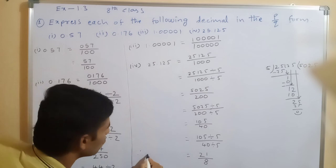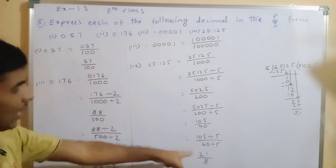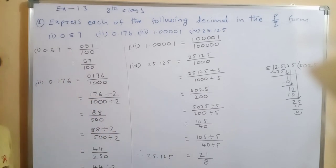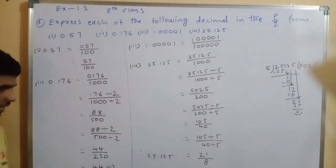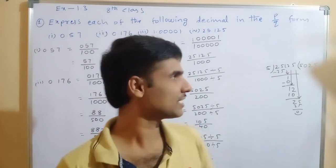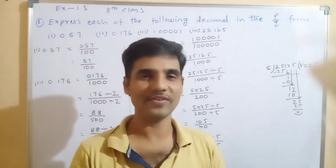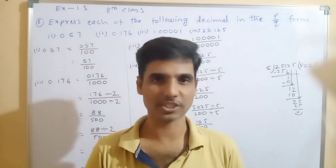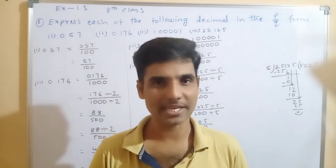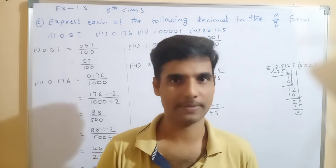Therefore 25.125 equals 201 by 8. If you did not understand anything, please comment and I will explain in the next video. Thank you for watching Rankers Academy YouTube channel.